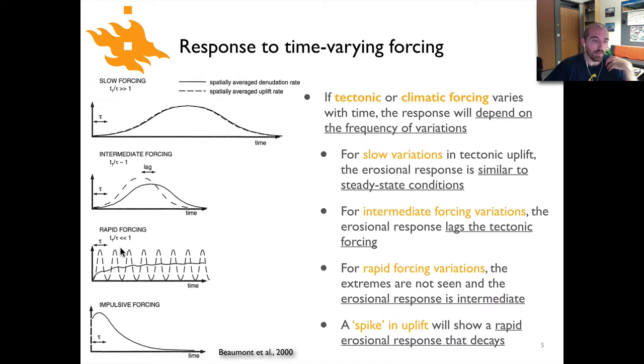Here we see rapidly varying tectonic forcing, so uplift rates going up and down very quickly. What you can see in terms of erosion is something that ends up being close to the average value for the rate compared to the uplift velocity for tectonics.